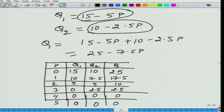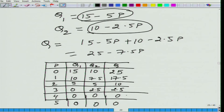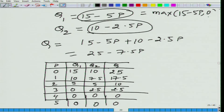When we are saying demand is 0 at those prices, it means we are not following the equation blindly. If you put P = 5 into Q1 = 15 minus 5P, you get minus 10. So what we really mean is that Q1 equals the maximum of (15 minus 5P) comma 0. Demand cannot be less than 0.